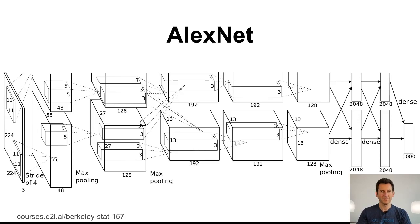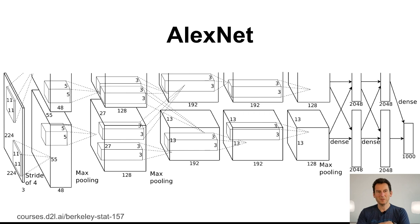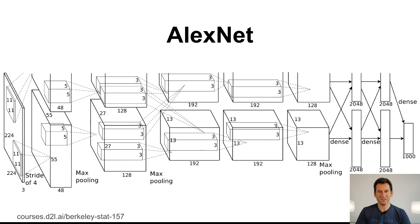Let's talk about AlexNet. AlexNet is named after Alex Krzyzewski and this network was proposed in 2012. If you look at it, it looks extremely similar to LeNet. When this network came out, people didn't quite appreciate what was in there. After all, this was like LeNet but just a lot bigger — more convolutions, more layers. This only changed when the AlexNet model won the ImageNet competition considerably. It's only then that people realized that maybe something exciting was going on there.